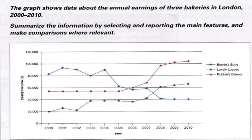Now you'll write two or more paragraphs of detail. What you're going to do is look at the detail closely and think about the important events that happened, and explain how these earnings changed over time with evidence from the graph — like giving figures and examples.